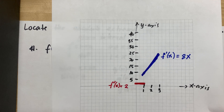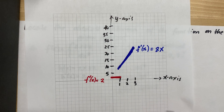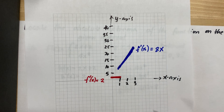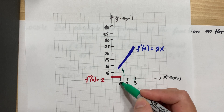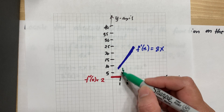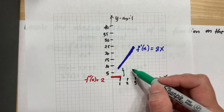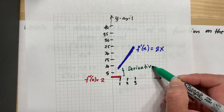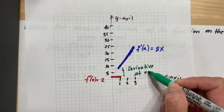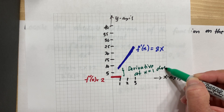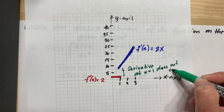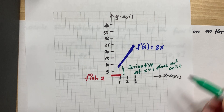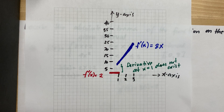The derivative doesn't exist at x equal to 1, but it doesn't mean there's no graph. This is the graph of the derivative. At x equal to 1, the two pieces of the derivative don't meet, so the derivative at x equal to 1 does not exist.